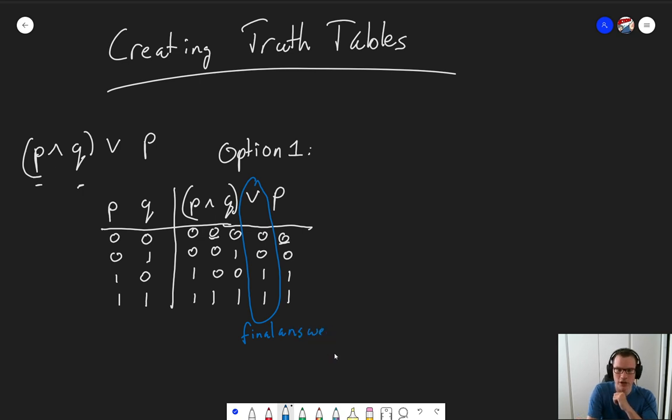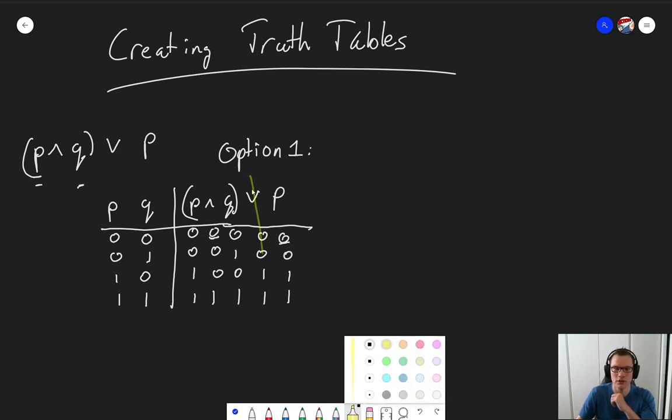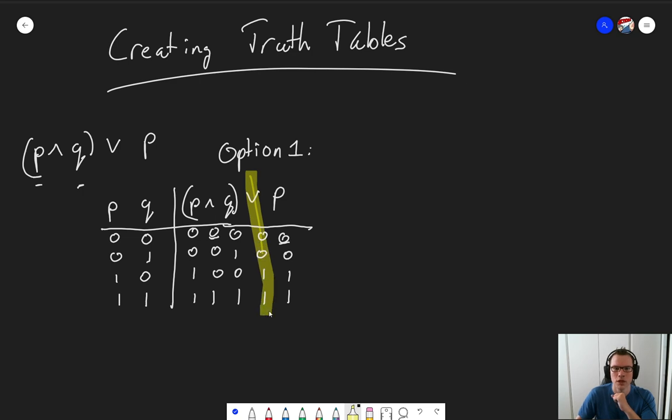So what you can do is you can either circle the column and then indicate that it is your final answer. Or if you brought a highlighter, feel free to also highlight the column that is the final answer. Or you can just put an arrow next to it and say final answer. Some way to indicate clearly this is the thing I want you to look at.